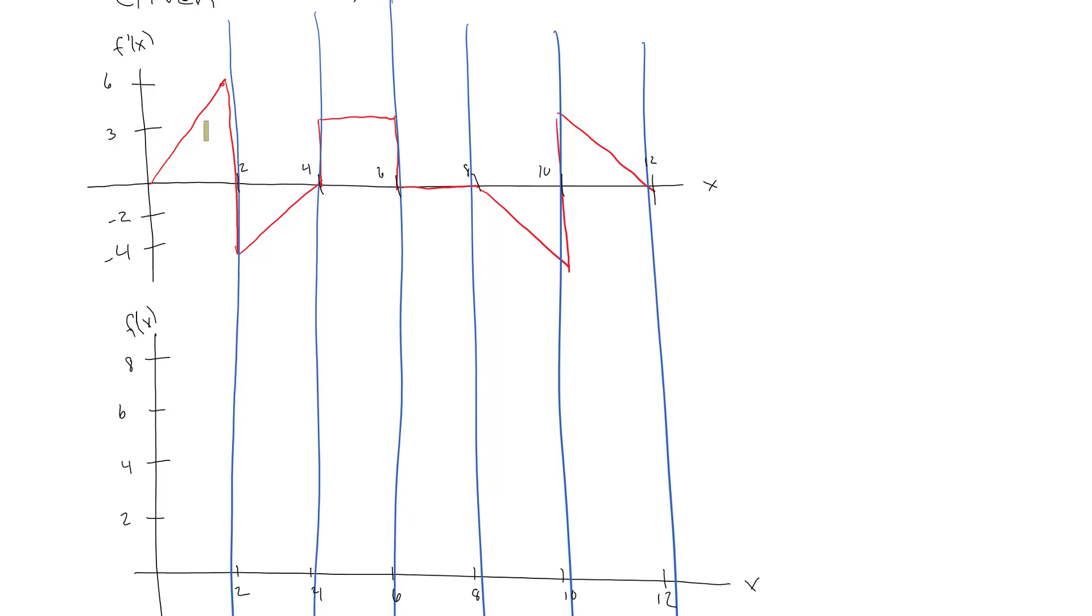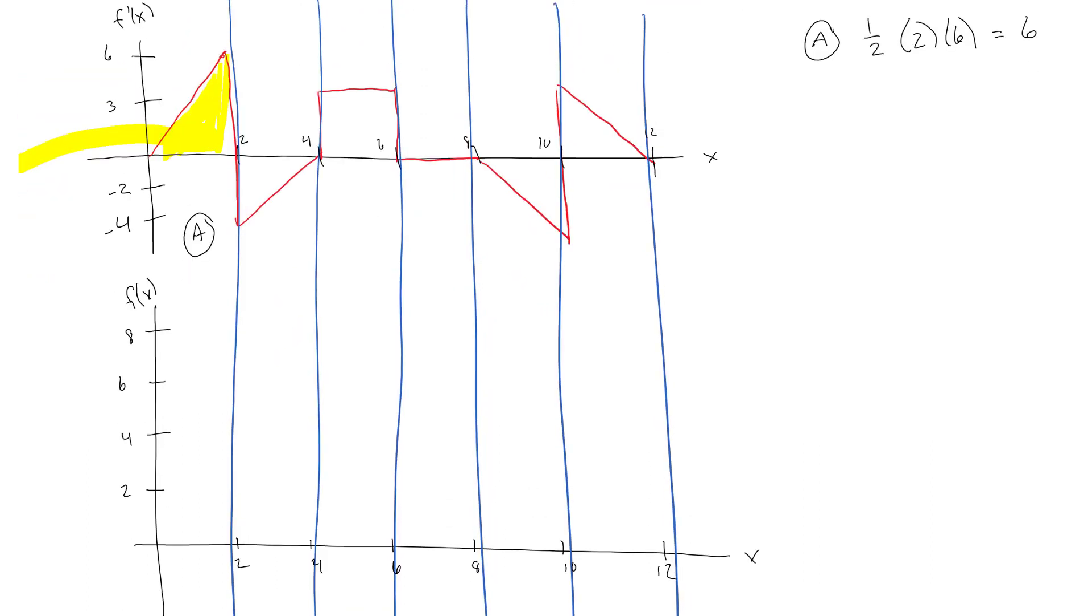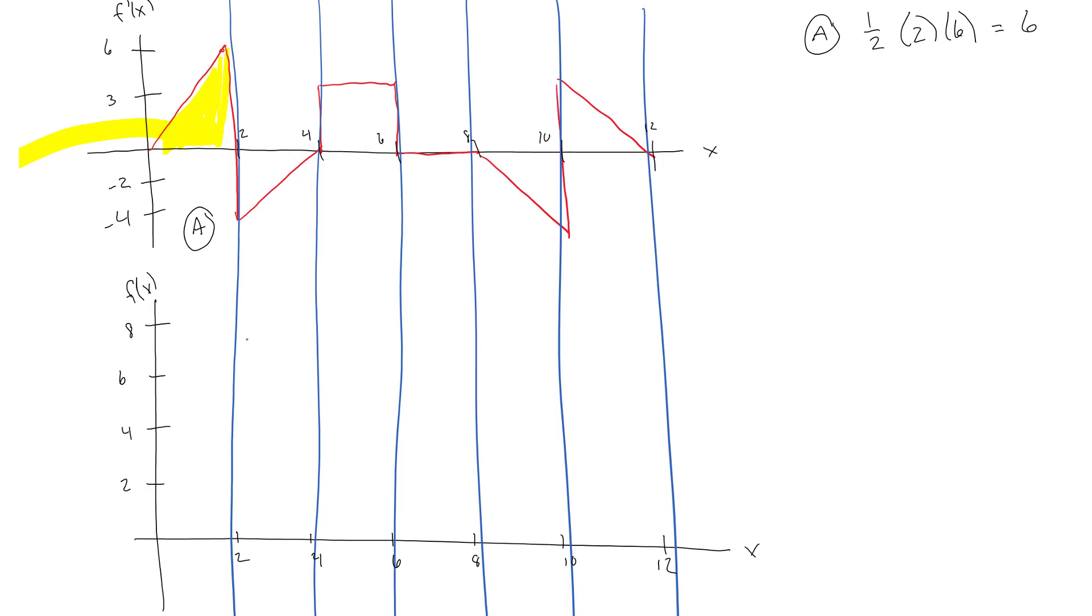So the first thing we're going to do is find the area under the curve of this triangle here. For area A, we have one-half base times height, so one-half times two times six, so that's going to be an area of six. That means since I started with an initial condition of zero, we are going to go up to six. So section A is going to come up here to six. It starts at zero and ends at six.